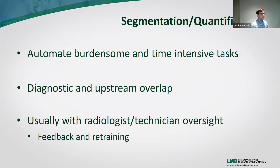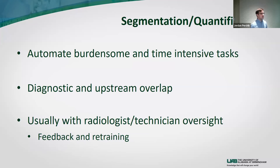The topic we will close with is segmentation and quantification. These are tools that assist in the certainly burdensome and time-intensive tasks of segmentation or quantification in a nuclear medicine scan. These types of tools overlap between diagnostic and upstream types and usually require oversight from a radiologist or technician. Over time they require feedback and retraining. There is a concept called algorithm drift — where tools may initially start with high performance but over time become less accurate or reliable, making it necessary to go back and retrain the algorithm.